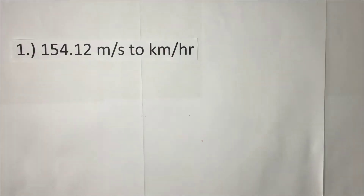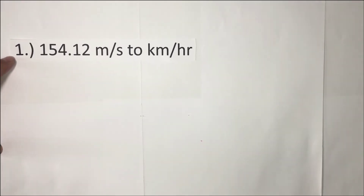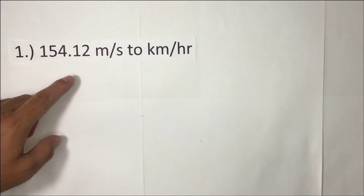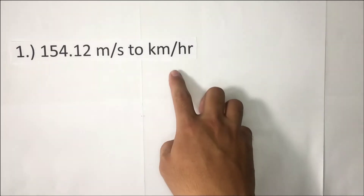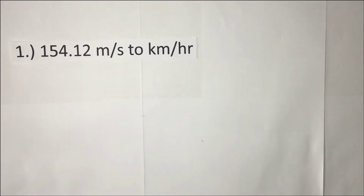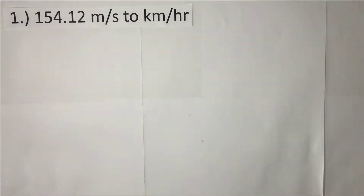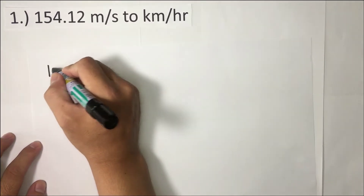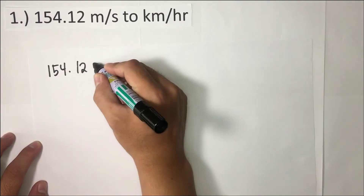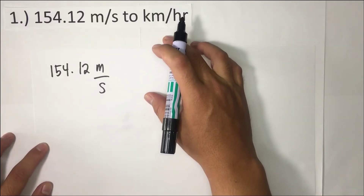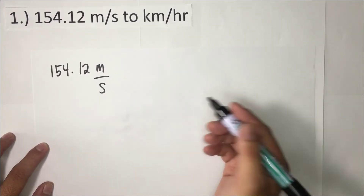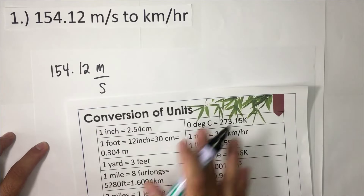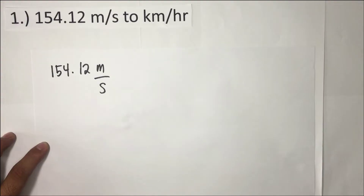Conversion table is very important in converting. For example, number 1: we have 154.12 meters per second to convert to kilometers per hour. According to the given, we need to convert 154.12 meters per second to its desired unit, which is kilometers per hour. To do that, we need to use the conversion table. Let's rewrite the given: 154.12 meters per second, to be converted to kilometers per hour.